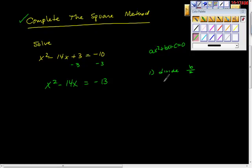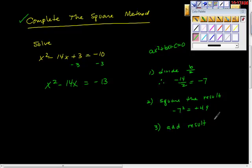So what does that give us? That gives us negative, therefore, negative 14 divided by 2 equals negative 7. Step 2: square the result. So negative 7 squared equals 49. And then lastly, add that result to both sides. You'll see what happens in a second, but it's actually pretty cool, I think.